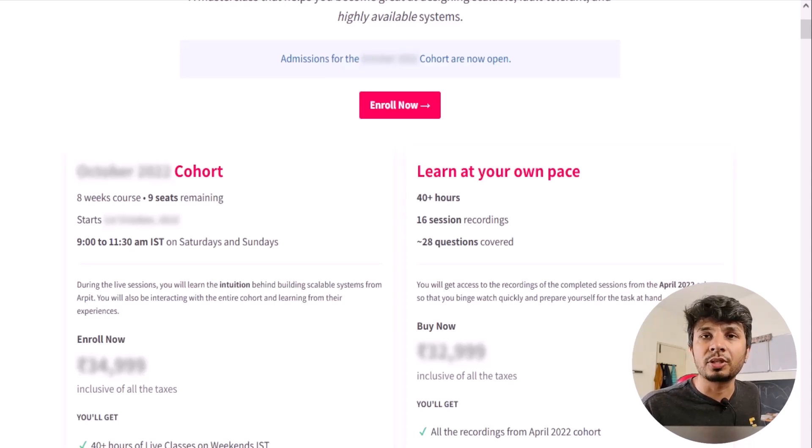If you are looking to learn system design from the first principles, you will love this course. I have two offerings for you: the first one is the live cohort-based course and the second one is the recorded offering. The live cohort-based course happens once every two months and will go on for eight weeks, while the recorded course contains the recordings from one of the past cohorts as is.